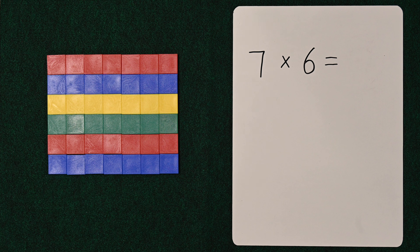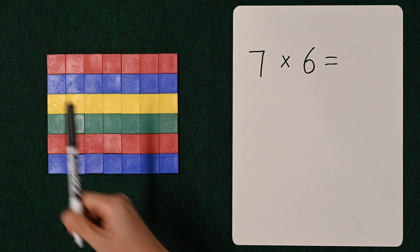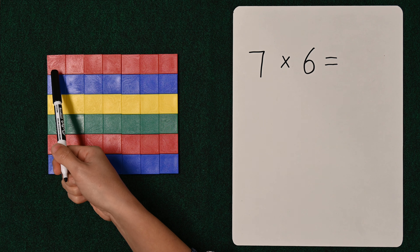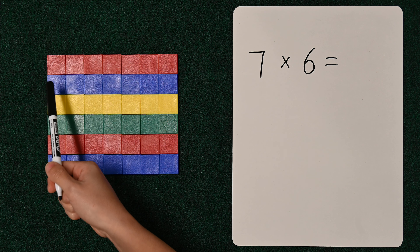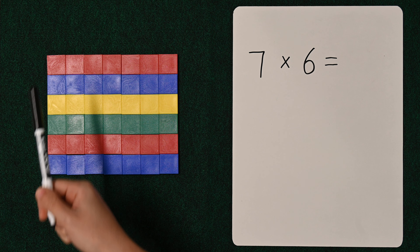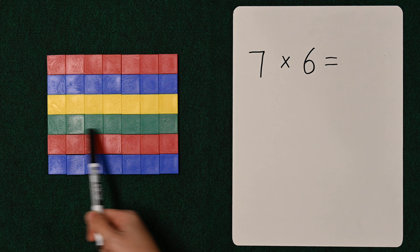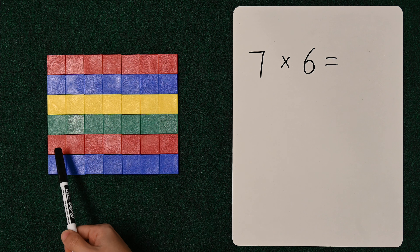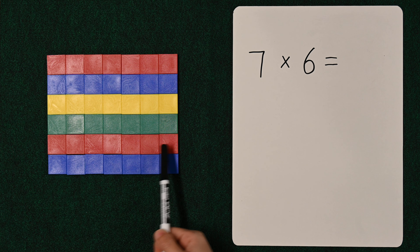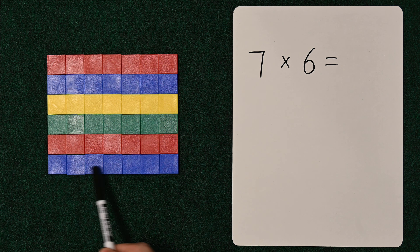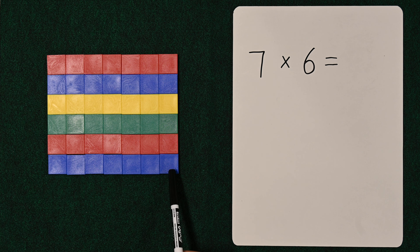Let's count by seven first. It's seven, fourteen, twenty-one, twenty-eight, thirty-five, forty-two.